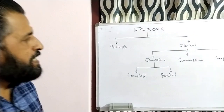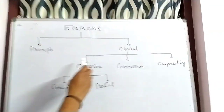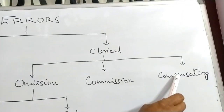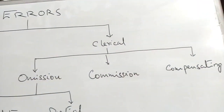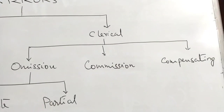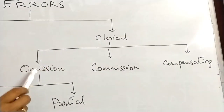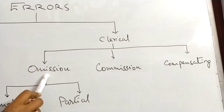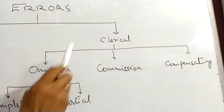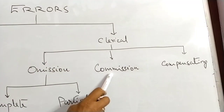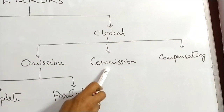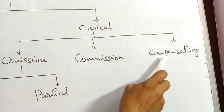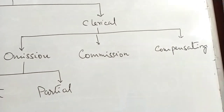Clerical errors include errors of omission, errors of commission, and compensating errors. These are the sub-types under clerical errors.